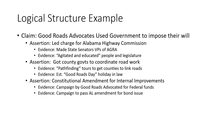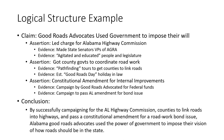My third assertion was that advocates successfully campaigned for an amendment to the Alabama Constitution to allow state governments to float bonds for road building. My evidence was the story of the campaign by advocates for the 1916 Federal Aid Road Act and the story of the Alabama campaign to secure matching funds in 1920. I concluded that by successfully campaigning for the Alabama Highway Commission, for counties to link local roads into highways, and to pass a bond issue, Alabama Good Roads advocates used the power of government to impose their version of how a roads and highway system should operate.